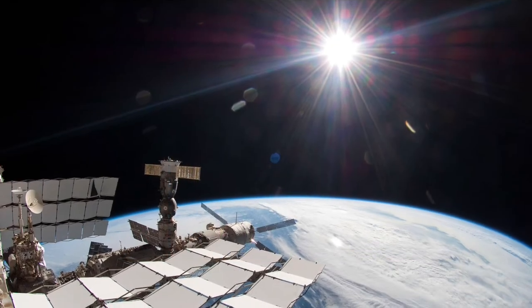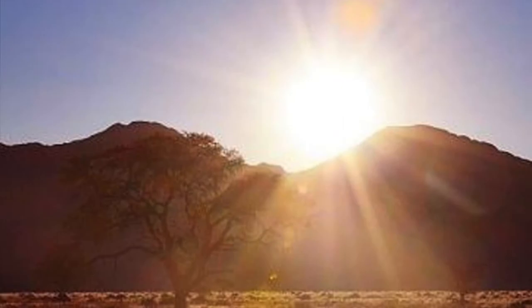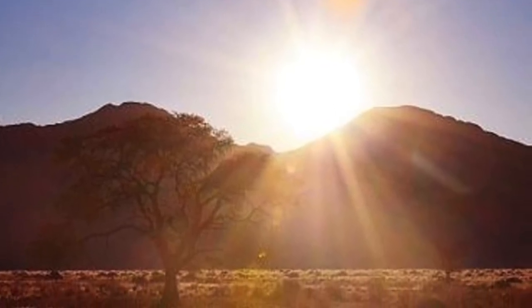So above the Earth's atmosphere, sunlight looks like this. Whereas from ground level, it has a softer yellow glow.